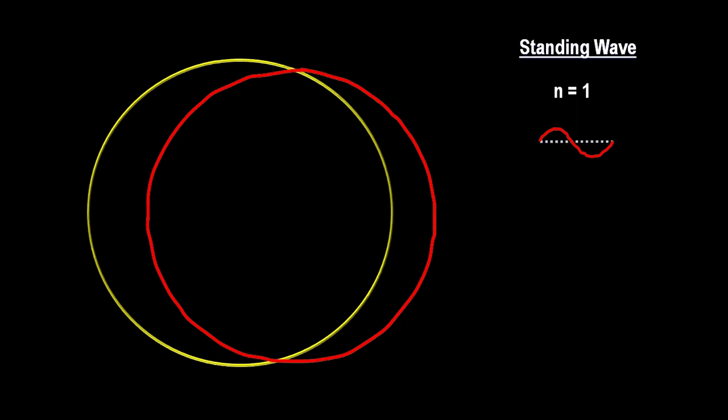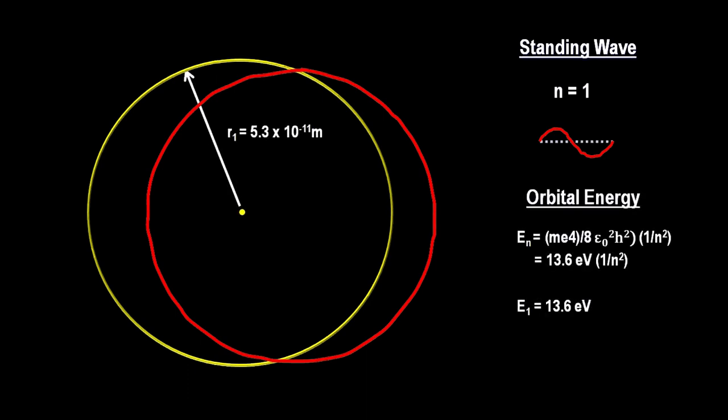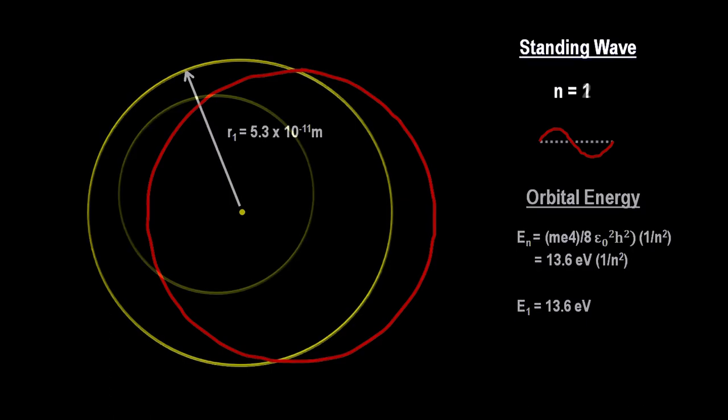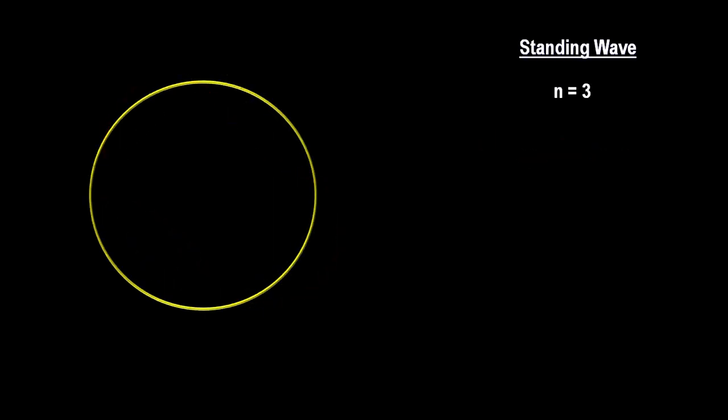So the first energy shell would have to have the radius that creates the circumference that exactly fits one wave. The second shell would have to have the radius that creates the circumference that exactly fits two wavelengths. The third shell would have to have the radius that creates the circumference that exactly fits three wavelengths.